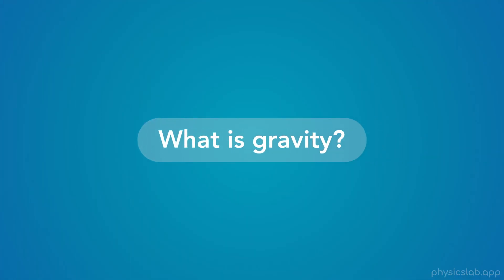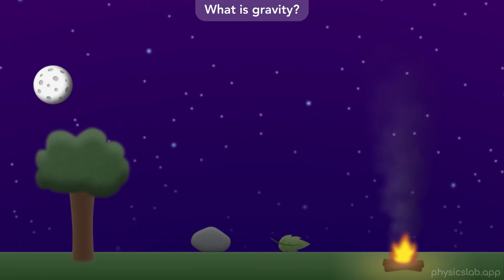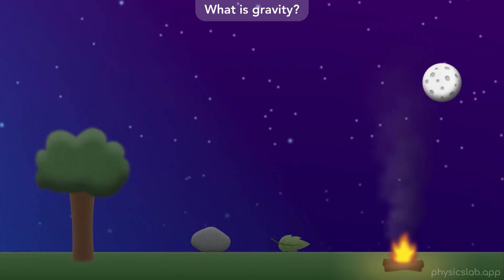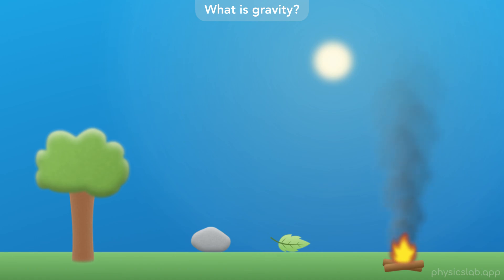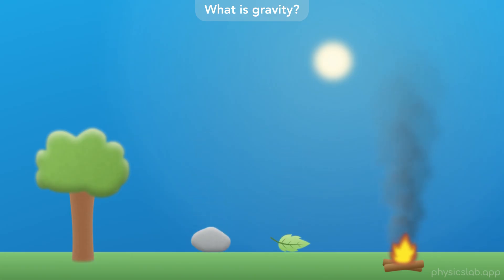So, what is gravity? People have been trying to understand the world and the universe for thousands of years. One of the big questions was: why do objects fall towards the Earth? Some ancient philosophers, like Aristotle, believed that the Earth was the center of the universe. Objects have their natural place, and a falling object is just trying to reach the center of the Earth. They thought that heavier objects fall faster, and things that were lighter, like smoke, naturally wanted to move upwards.